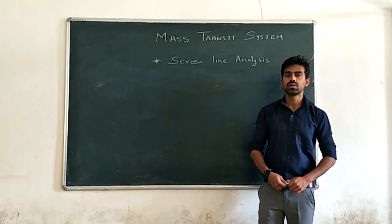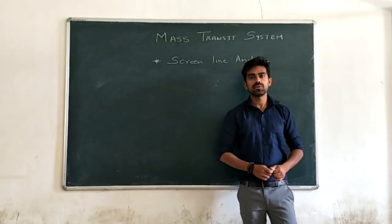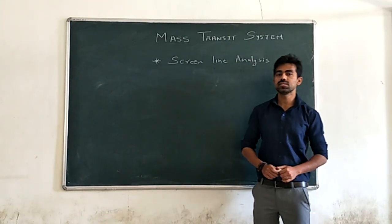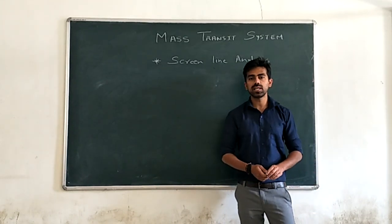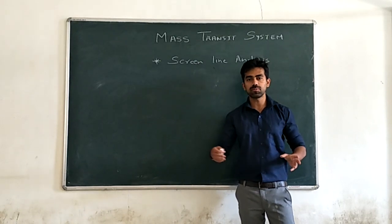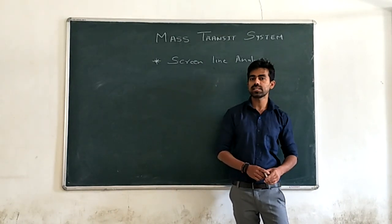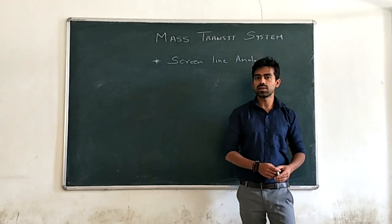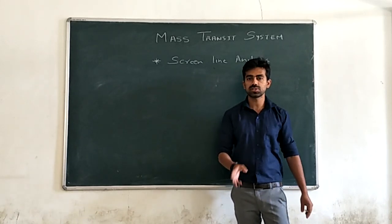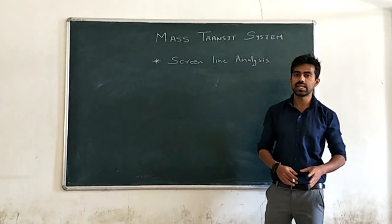Good morning students. Today's topic is screen line analysis. First of all, what is a screen line? A screen line is an imaginary line which divides your study area into two different parts. Natural barriers or physical barriers like river, canal, or railway which crosses your study area and divides it into two parts — that line is known as a screen line.